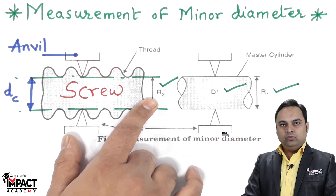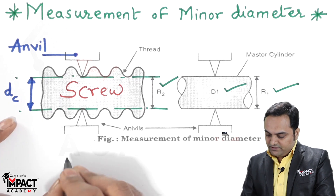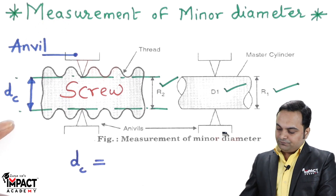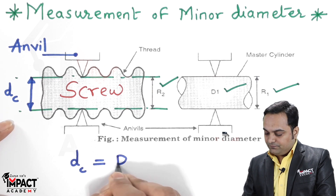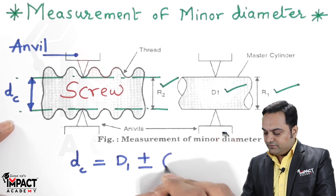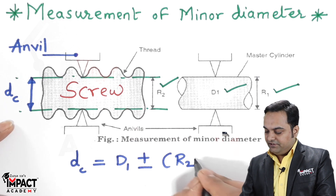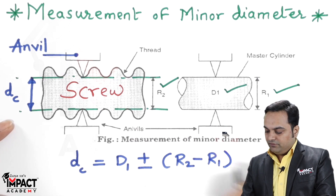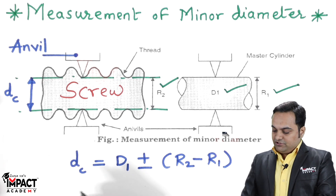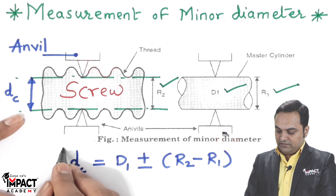With the wheels in contact with Dc, we get the reading R2. Using a simple formula: core diameter D suffix C (the minor diameter) equals D1 plus or minus (R2 minus R1). With this formula, the core diameter Dc can be calculated in millimeters.